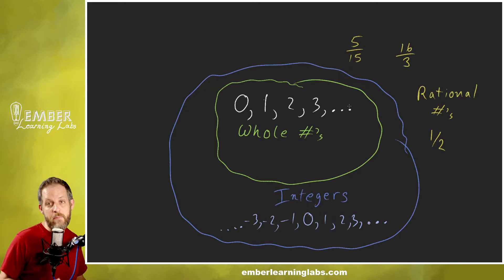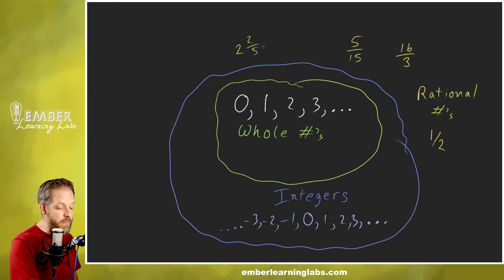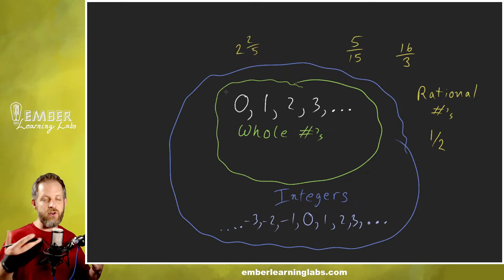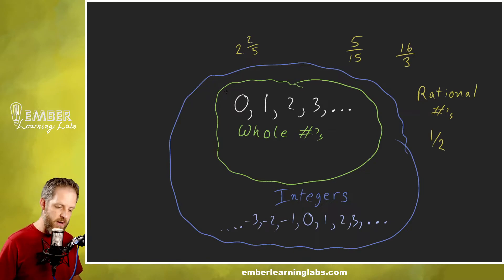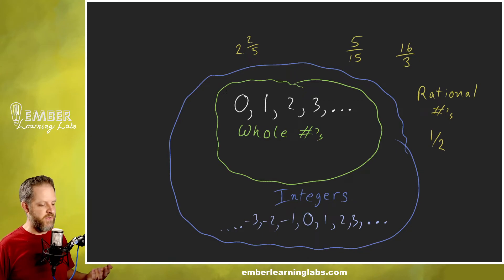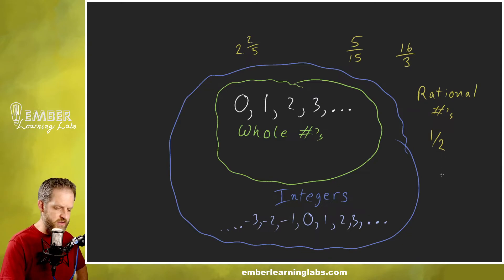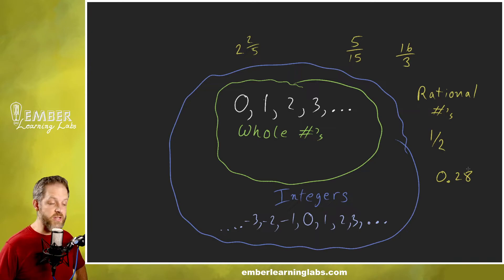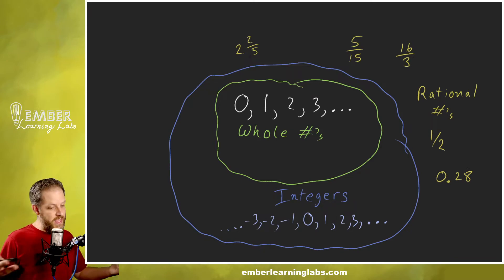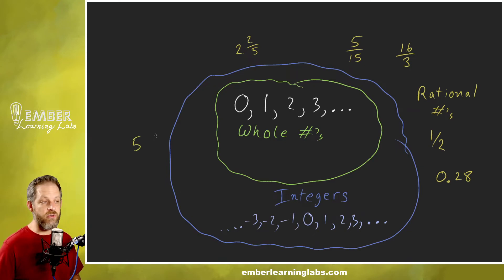You could convert sixteen-thirds to a mixed number — something like two and two-fifths. You may or may not have seen how to convert a mixed number to just one fraction, but it can be done, and if you can turn it into a fraction it's a rational number. Also, something like 0.28 — that's a rational number because we could turn that into a fraction. So decimals are also rational numbers.